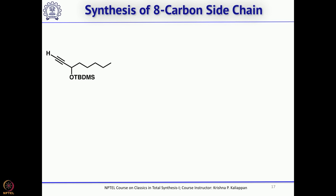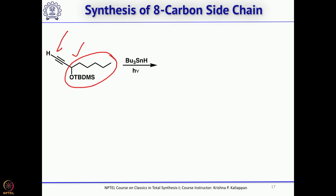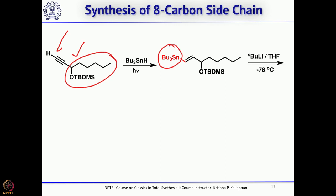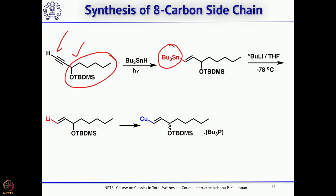The C8 side chain was synthesized starting from a protected alcohol, which can be made in 2 steps from the corresponding aldehyde — add lithium acetylide/ethylenediamine, get the alcohol, protect as TBDMS ether. Treatment with tributyltin hydride under photochemical conditions adds to the triple bond to give the trans double bond with a tributyltin group at the terminal carbon. Treatment with butyllithium exchanges tin for lithium, and subsequent treatment with copper gives the vinyl copper species required for 1,4-addition to the cyclopentenone.